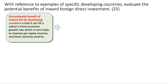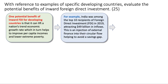First point: one potential benefit of inward FDI is that it can lift a country's trend growth rate, which in turn helps to improve per capita incomes and reduce poverty. For example, India attracted nearly 50 billion dollars of FDI in 2019. This is an injection of external finance into the circular flow, helping to avoid the gap between savings and investment which is often characteristic of lower and middle income countries.